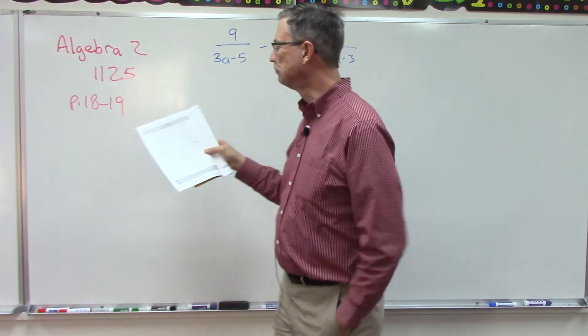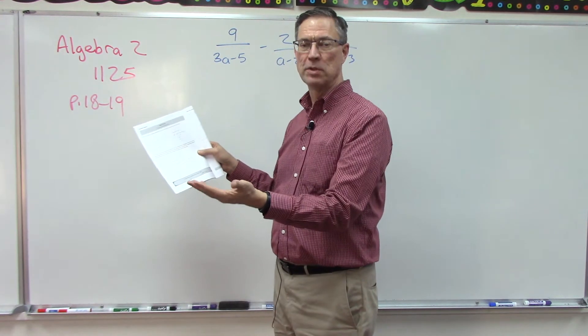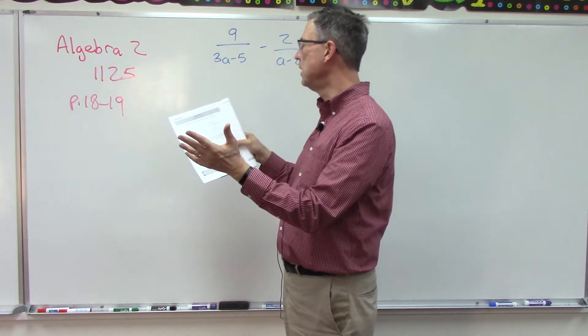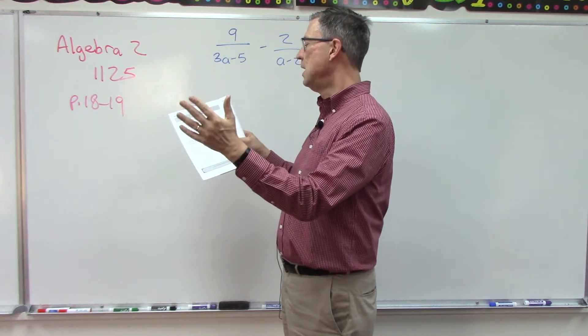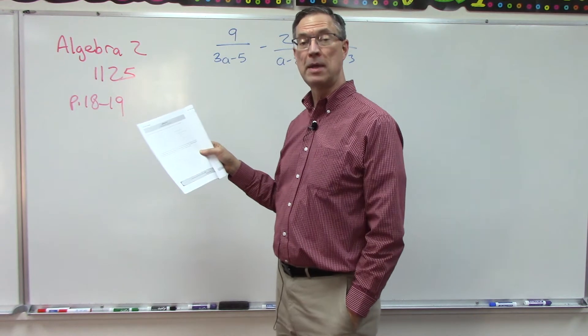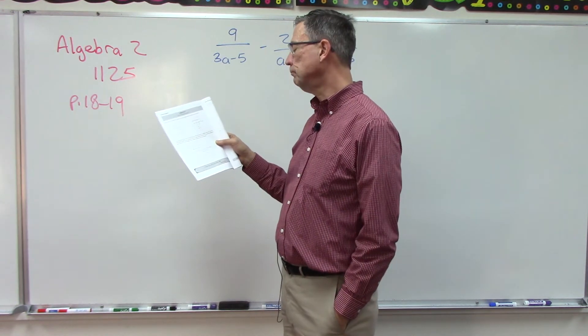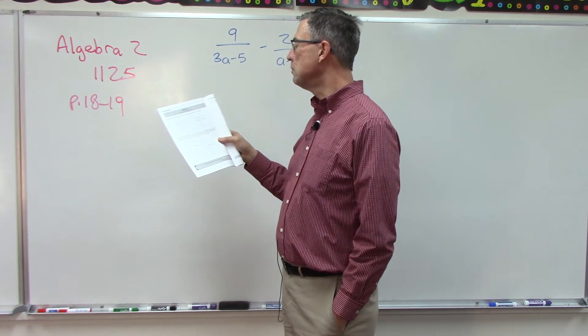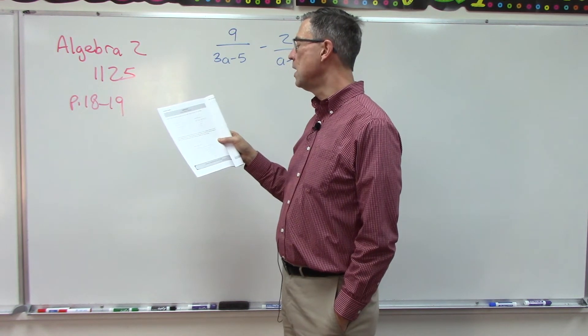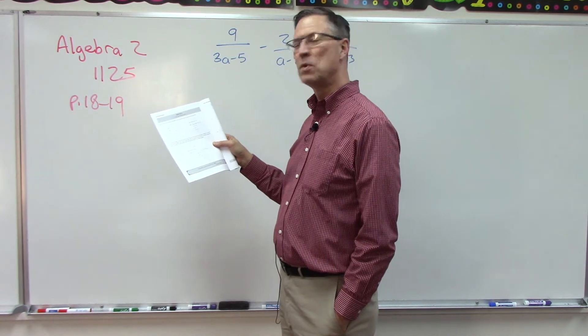On page 18, you'll notice the first one just has numbers. That's easy. You get the least common denominator, which in this case is 24, and then they show you how you multiply both sides of the equation by that and see what cancels out. That one's pretty easy. The one to the right, that one's not too bad either. You can see that a times the quantity a minus 1, multiply both sides, it works out pretty easy.